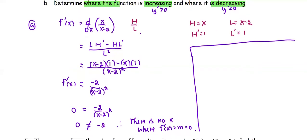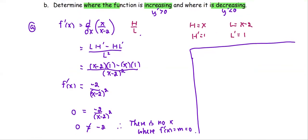Next part, part b, we are going to look at the interval that makes the function increasing or decreasing. Since f prime is in the form of -2/(x-2)² and no x makes the slope to be 0.